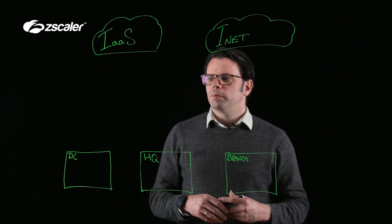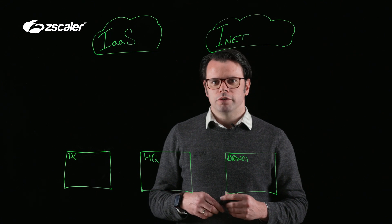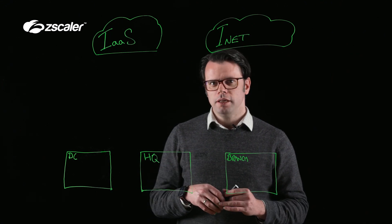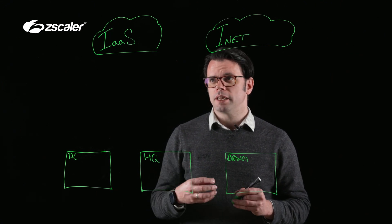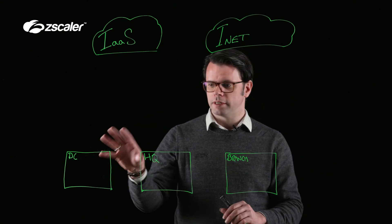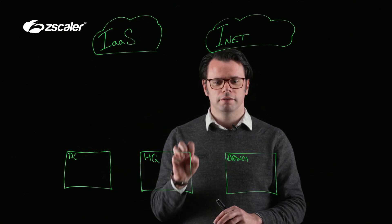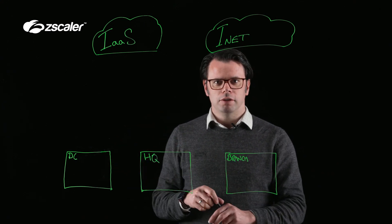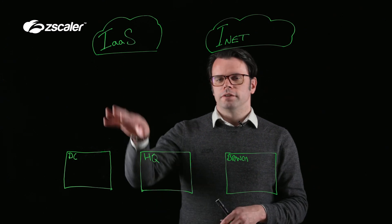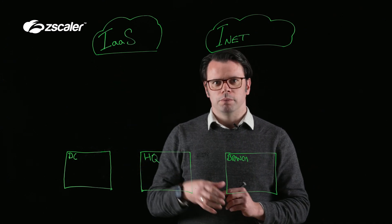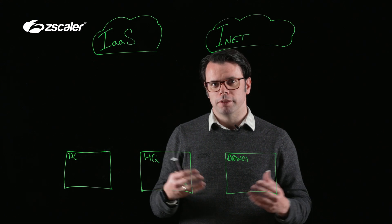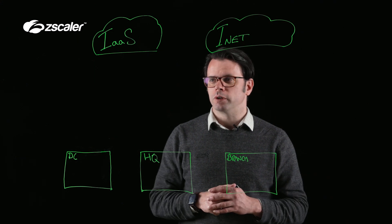What I'm going to do is have a quick talk through some of the traditional connectivity methods that we see, and some of the challenges when we think about connecting our physical locations — things like data centers, HQs, branch offices together — as well as up to infrastructure as a service, where we're using more of a cloud-first methodology in organizations.